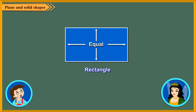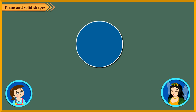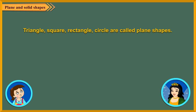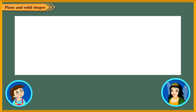Do we have any shape made up of curved lines? Yes, Neha. We have shapes made up of curved lines also. Look at this shape. It is made up of a closed curve. It has no corners, and this is called a circle. These shapes — triangle, square, rectangle, and circle — are called plane shapes, because each one of these can be drawn on a plane paper.